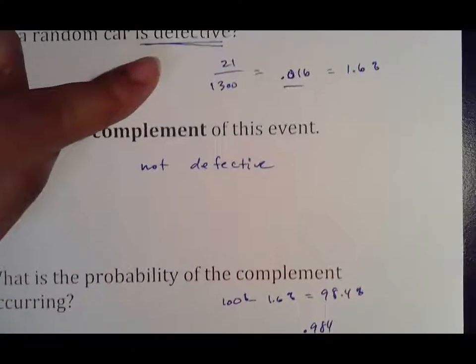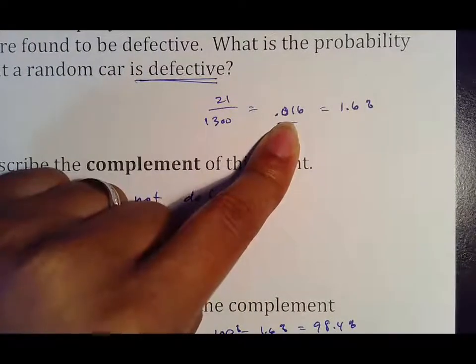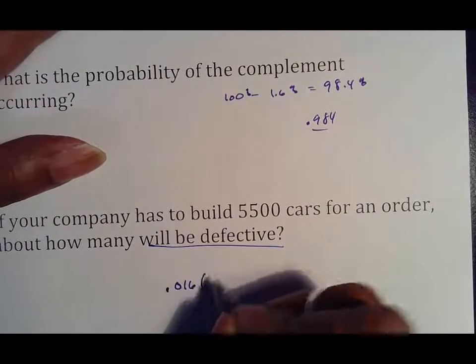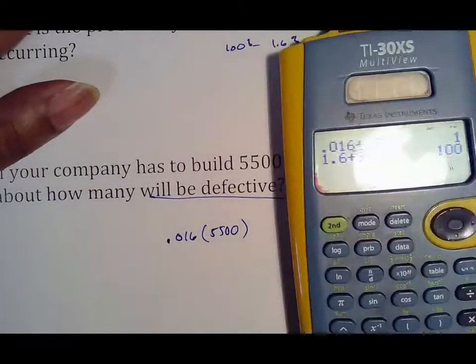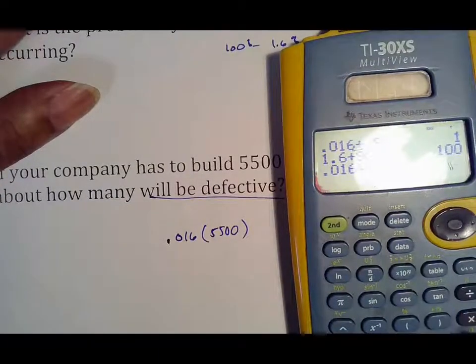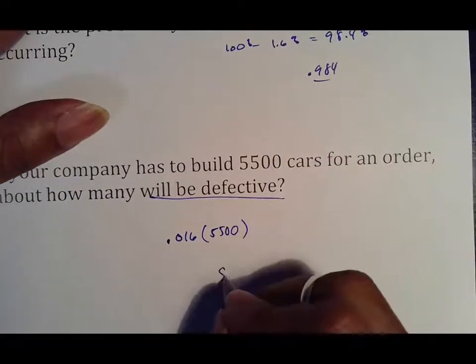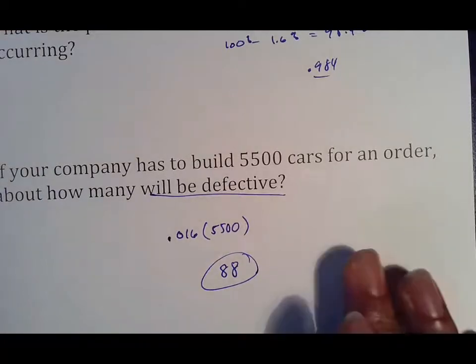So we go to our defective number, which is 1.6 percent, or 0.016. And remember, we usually use this to multiply, so we would do 0.016 out of 5500 gives me the number of cars that should be defective, which tells me that 88 cars more than likely are going to be bad. So again, I will make a plan for 88 cars to be bad.